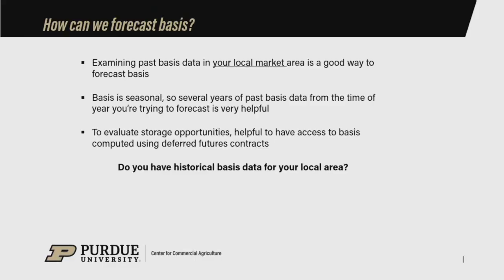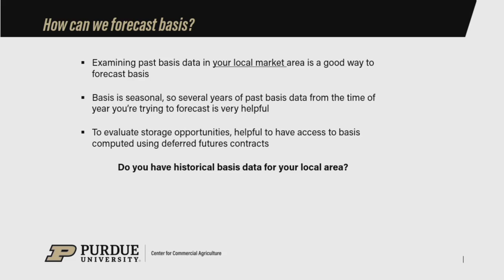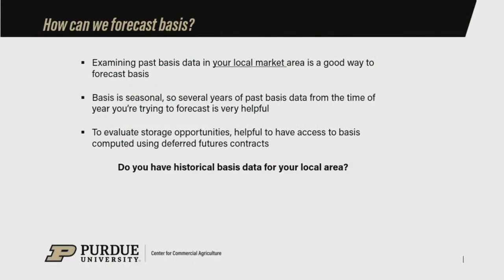To forecast basis and anticipate basis, you need some past basis data for your local market area. You need basis information that's for your region, your approximate market area. It doesn't have to be for the exact elevator or terminal that you normally sell grain to, but you need to know what basis is doing and has done in your local market area. Having several years of that data is really useful. Any one year may or may not perfectly reflect the seasonal pattern we expect in a particular region, so having two, three, maybe four or five years worth of data helps average out some of those year-to-year variations.